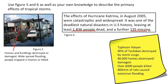Typhoon Haiyan, which hit the Philippines, saw 90% of Tacloban destroyed by a storm surge. 40,000 homes were destroyed, over 6,000 people were killed, and 400 millimetres of rain caused extensive flooding in the area. I've used figure 5, I've used figure 6, and I've added a splash of my own knowledge.